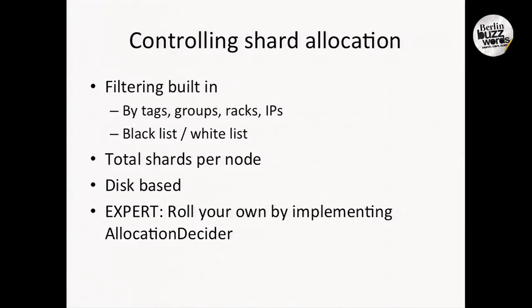That's all already implemented for you - all you have to do is play with some settings, either using JSON index settings or the Elasticsearch YAML. You may want in some cases to implement your own shard allocation logic, but that's very, very dangerous. A lot of times the sharding allocation deciders in play - there is generally more than one - so you want to make sure your custom decider plays really, really nicely with the others. Again, super expert feature.